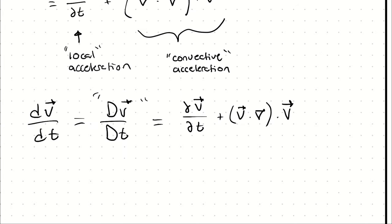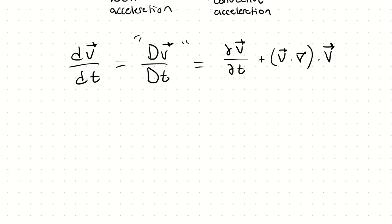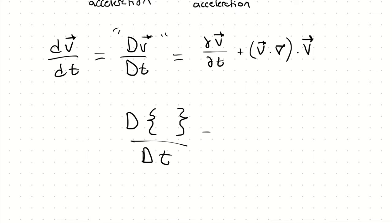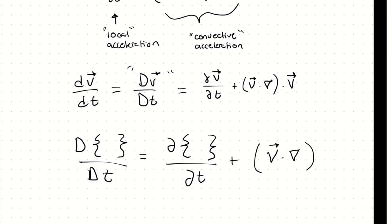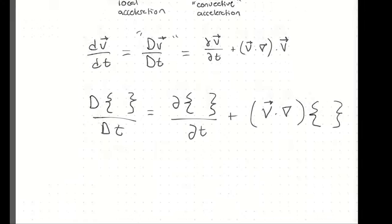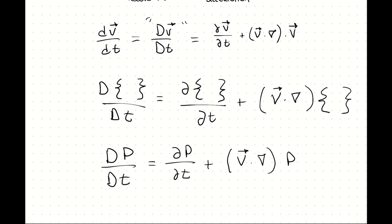This operator can apply to any macroscopic tensor field. We can write the material derivative of any quantity as the partial derivative of that quantity with respect to time plus the velocity vector dotted with the gradient of that quantity. For example, the material derivative of pressure with respect to time would be the partial derivative of pressure with respect to time plus u times the partial derivative of pressure with respect to x, plus v times the partial derivative of pressure with respect to y, plus w times the partial derivative of pressure with respect to z.